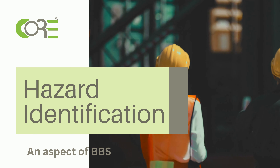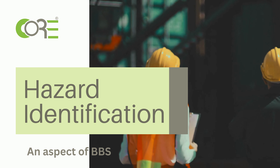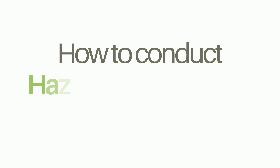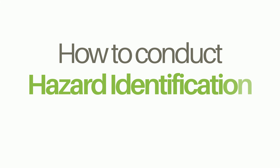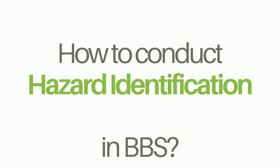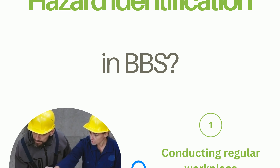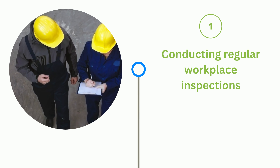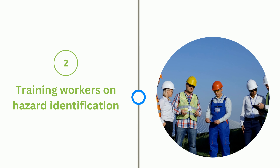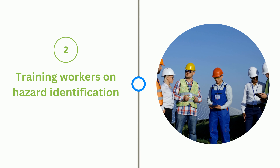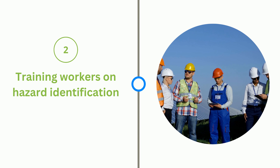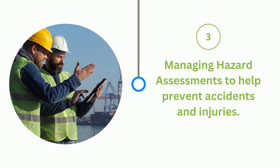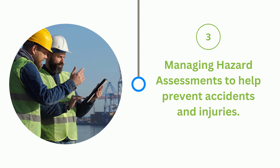Hazard Identification in Behavior-Based Safety. A few ways to identify hazards include conducting regular workplace inspections, training workers on hazard identification, and managing hazard assessments to help prevent accidents and injuries.